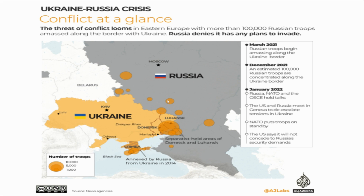As you can see here, the Ukraine-Russia crisis map shows the number of troops in the eastern and southern parts of Ukraine. Crimea was annexed by Russia in 2014, and the war has been ongoing since 2014 in the Luhansk and Donetsk regions in the eastern part of Ukraine.